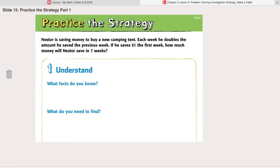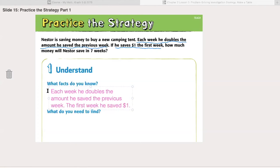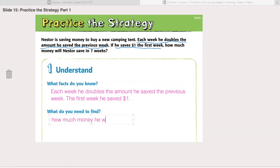Step one, understand. What facts do you know? Okay, let's go back into the problem. We know that each week he doubles the amount he saved the previous week. We also know that he saved one dollar the first week. What do you need to find? We need to find, according to that question, how much money will Nestor save in seven weeks if he saved one dollar in the first week.